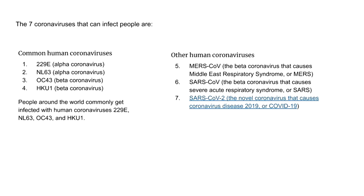The other three human coronaviruses that emerged were the MERS coronavirus, which is called Middle East Respiratory Syndrome, and SARS, which is Severe Acute Respiratory Syndrome, and then the latest one, SARS-CoV-2, also known as COVID-19. COVID-19 really means coronavirus disease identified in 2019.